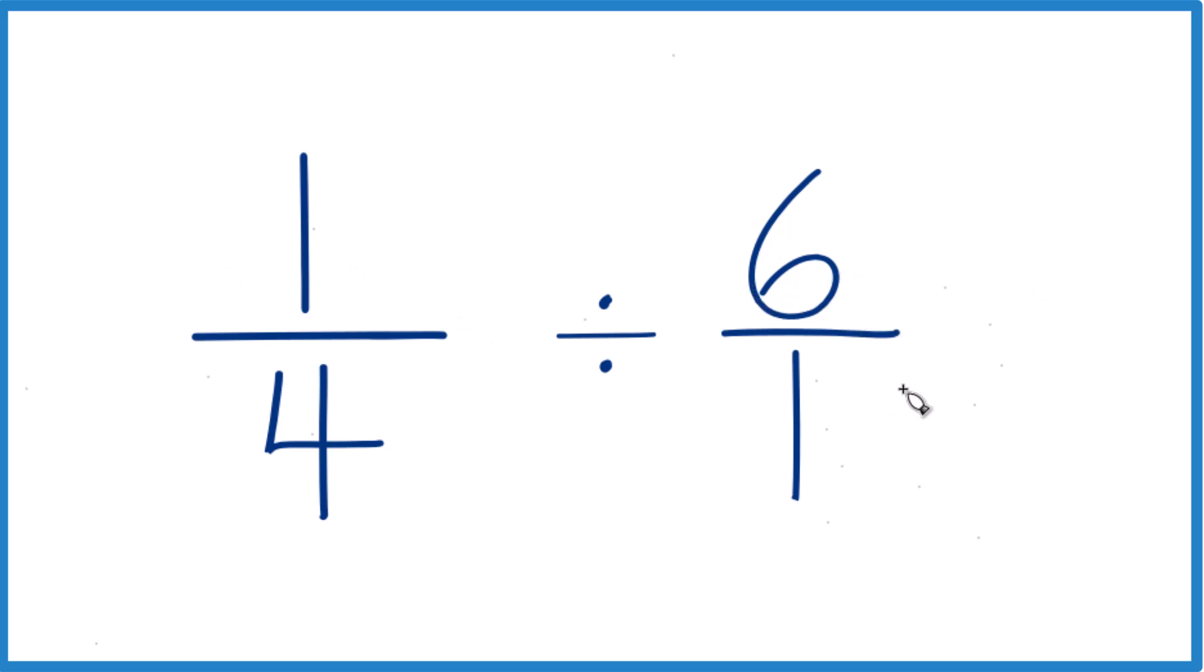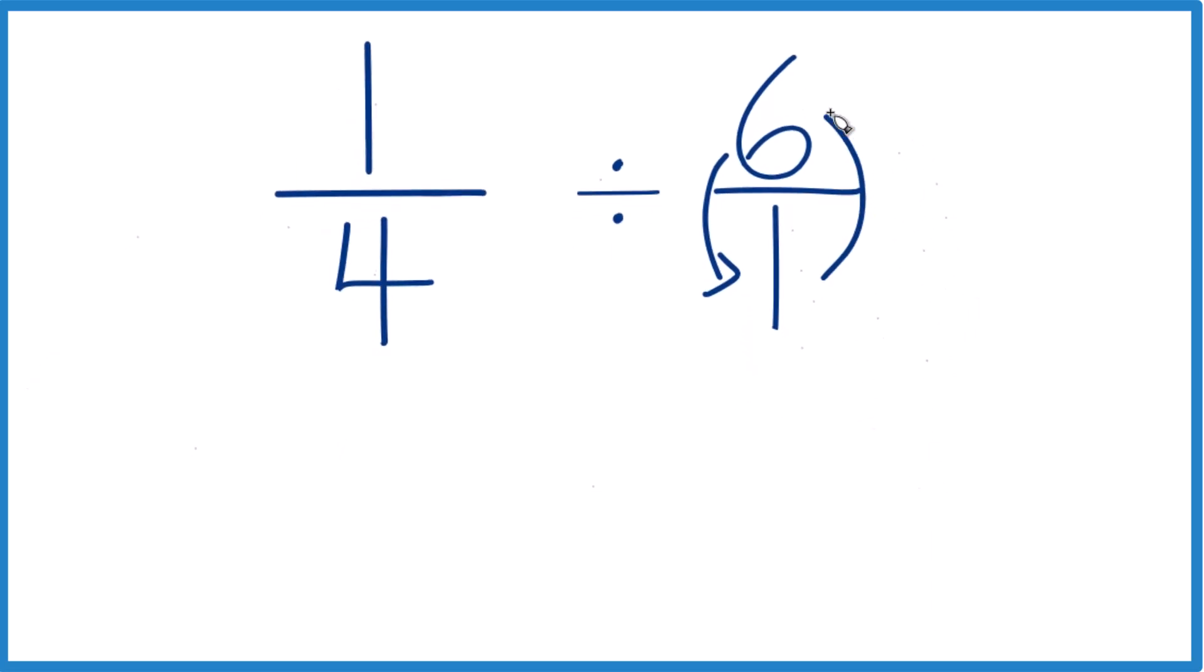Because what we want to do is we want to take the reciprocal of 6 over 1, or the reciprocal of 6. So 6, that goes to the bottom. 1 goes to the top.